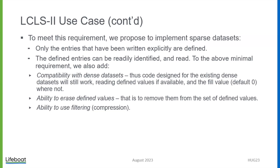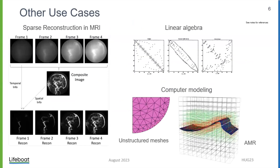There should also be the ability to redefine defined values or erase defined values. And of course, compression is very important — compression and data filtering should be applied. Other use cases I found: with MRI, what happens when you're sitting there for 40 minutes — they take a very quick sequence of very low resolution images.